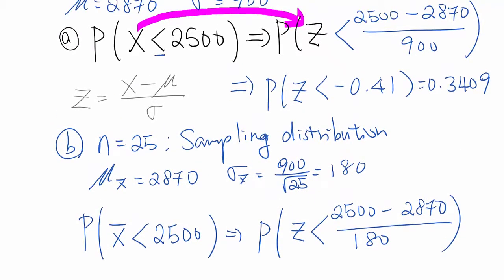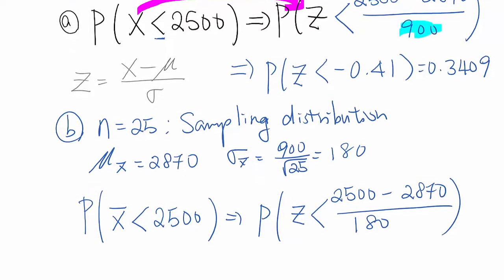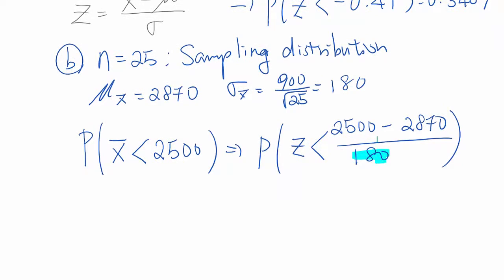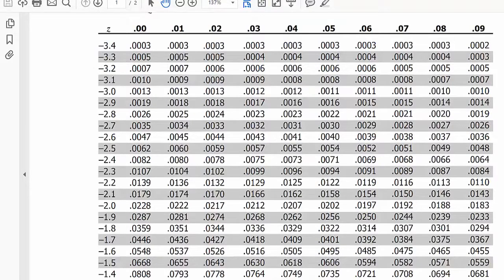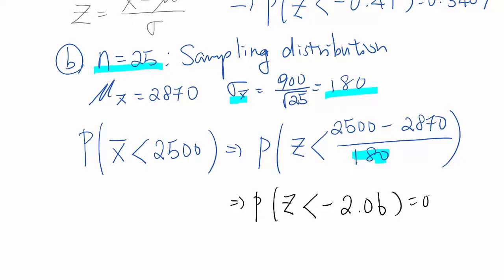Before, it was 900, right? But now, it is 180 because we took sample. So, sigma value must be adjusted based on our sampling data. That's why we can use sigma value which is 180. If you calculate, you get probability z is less than negative 2.06. So, go to z table and negative 2.06 which is 0.0197. That's the answer for b.